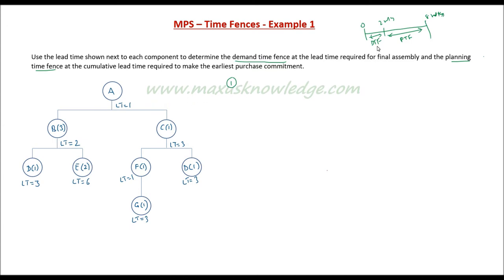Demand time fence is where you want to do very minimal changes. The question says that the demand time fence should be set at the lead time required for the final assembly. Final assembly is A and in order to assemble A using B and C, you need a lead time of 1 week.